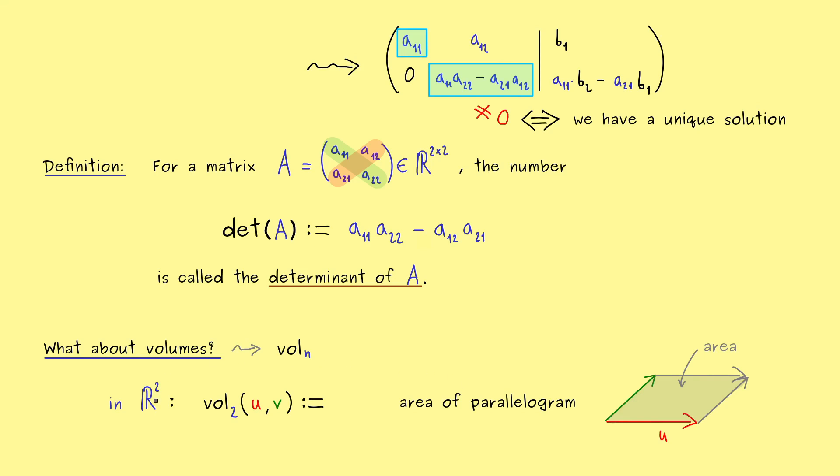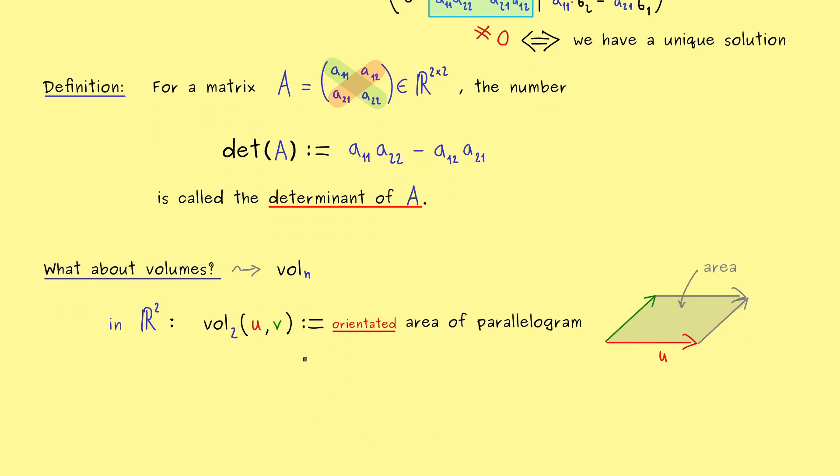However, you might already know we also want to bring in a sign for this volume function. Therefore we would say it's the orientated area of the parallelogram. This means the area could also be negative if we have a negative orientation. Therefore at this point you should ask how is the orientation defined. So this means we have to define in which case we take the plus sign and in which case we take the minus sign.